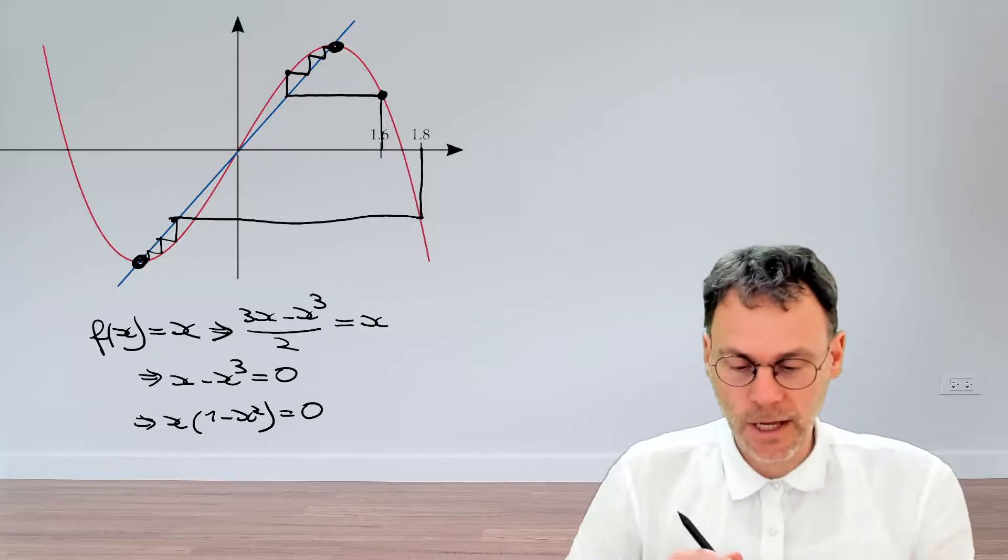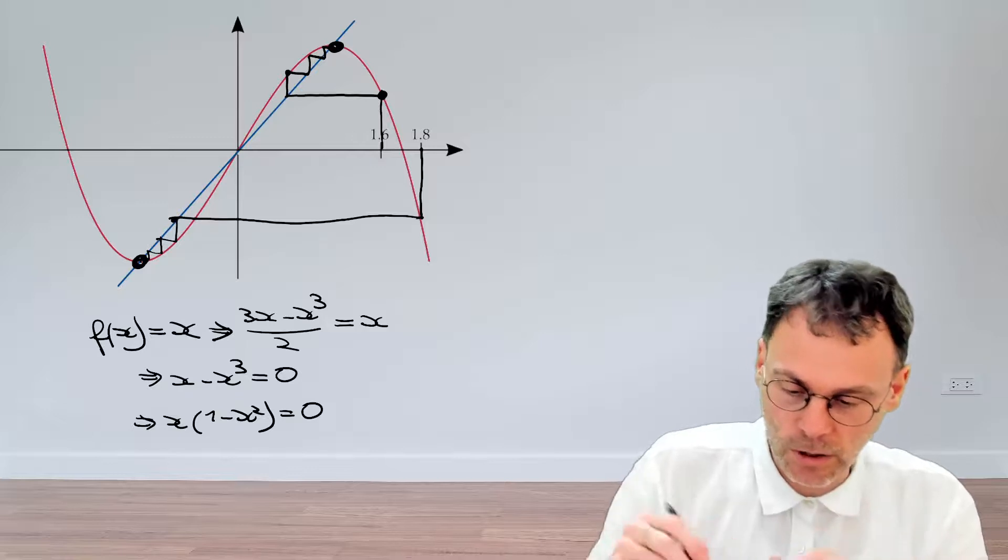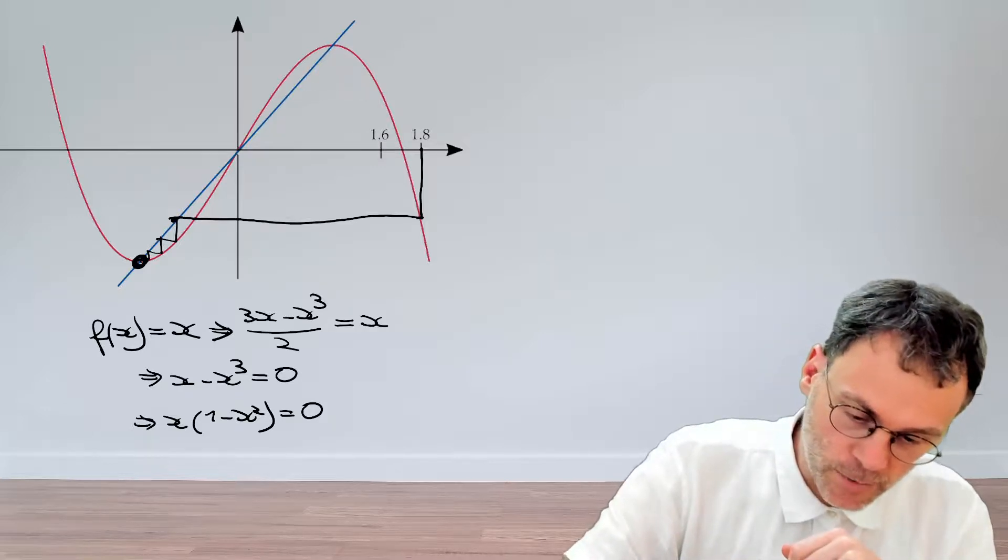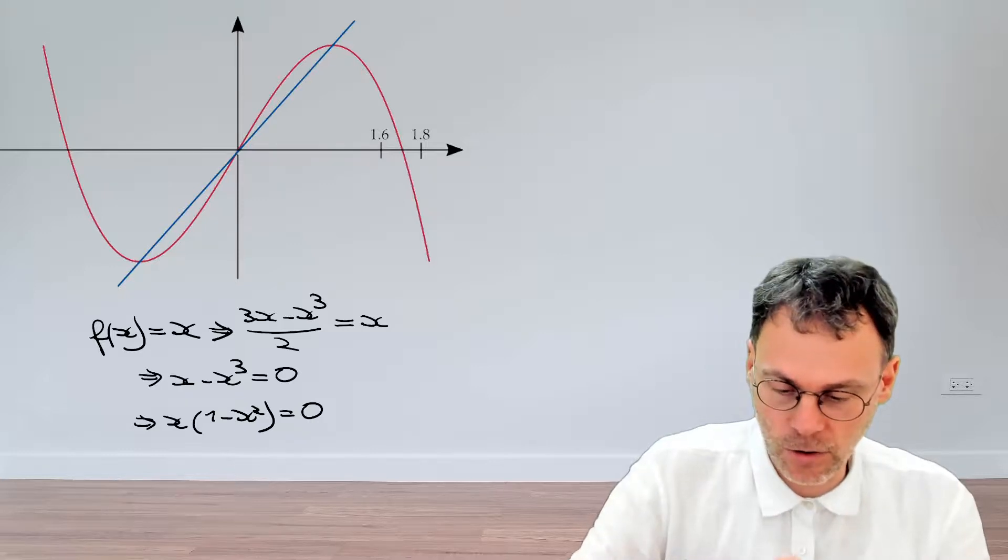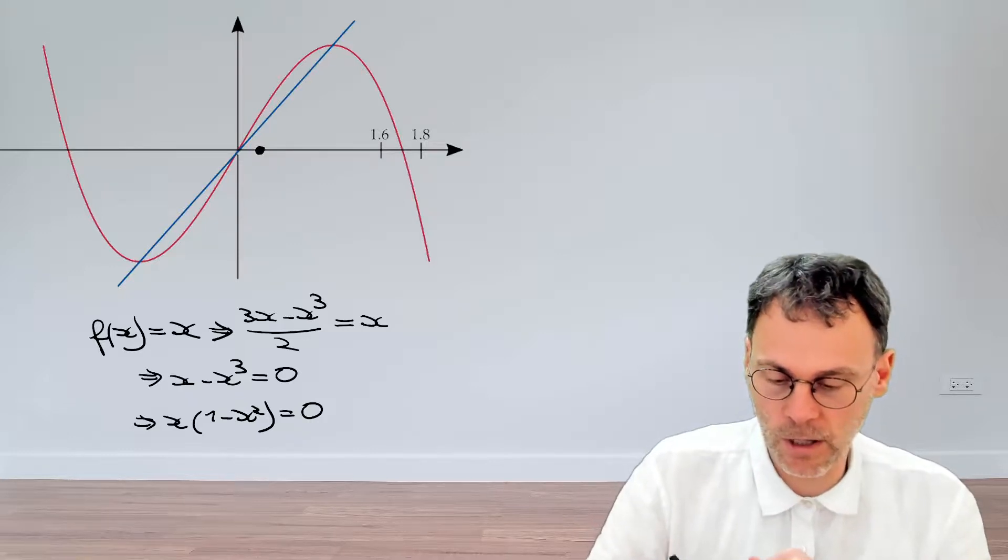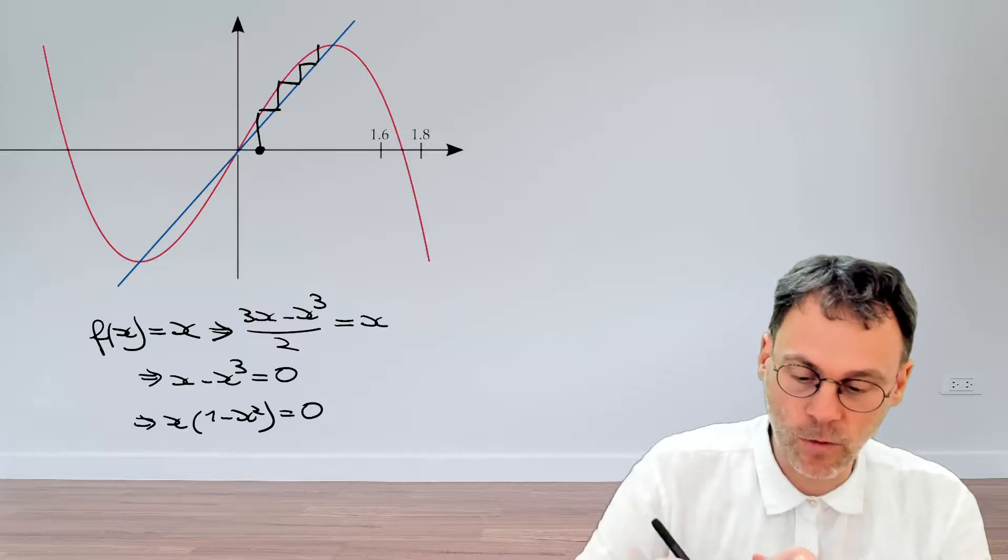Let's see what happens if we start from a point very close to the origin, the fixed point in the middle. Let's clean this up and say we start close to the origin over here. But if we draw our cobweb diagram, you see that we run away from the origin.